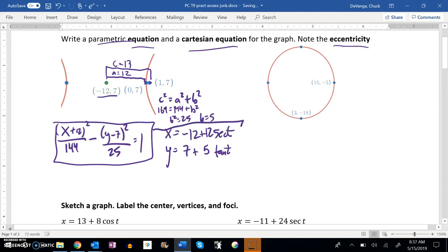And the last piece that I need is the eccentricity, and the eccentricity of this is C over A, so it is 13 over 12. And it makes sense. Eccentricity is greater than 1 for a hyperbola.